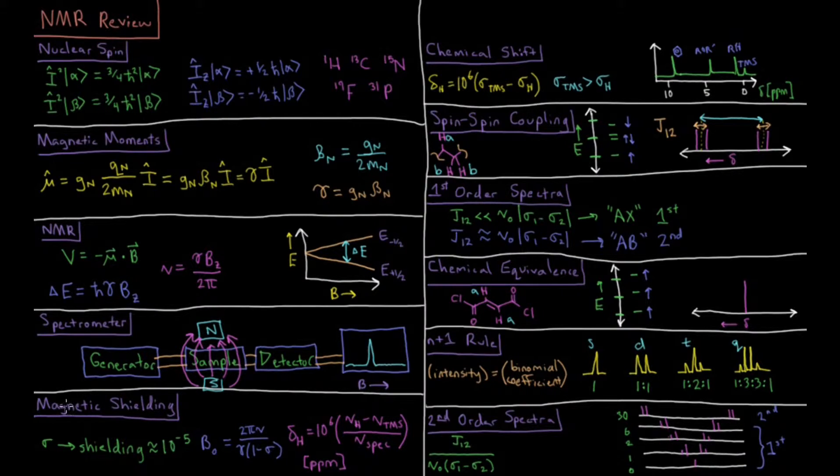We have magnetic shielding, which occurs due to the chemical environment that the nuclei are in. The various electrons around the nuclei can increase or decrease the chemical shielding, depending on how they're arranged. So that shielding constant sigma is typically on the order of 10 to the minus 5th. We have the magnetic field beta naught equals 2 pi times the frequency divided by gamma, or magnetogyric ratio, times 1 minus sigma.